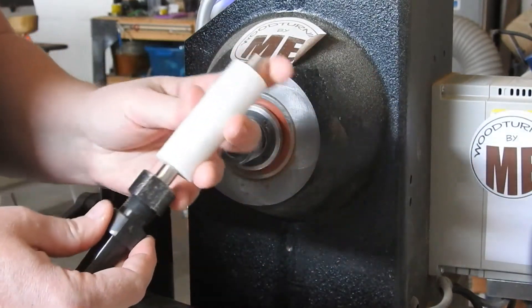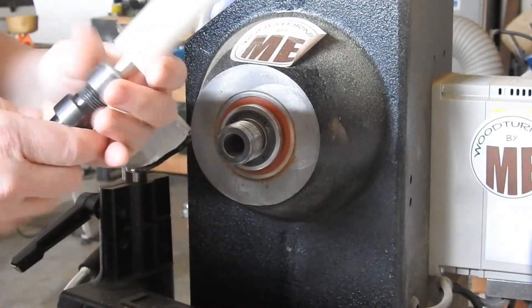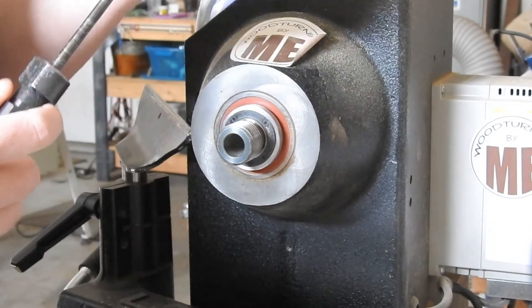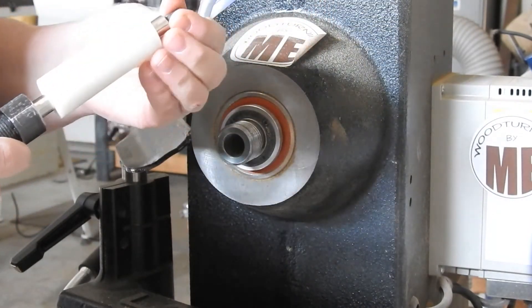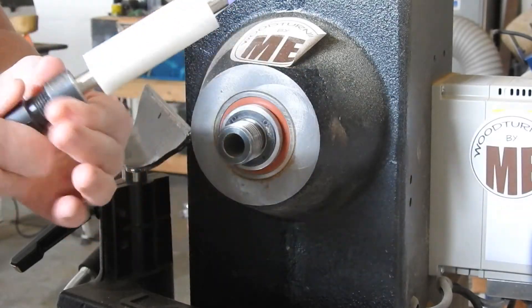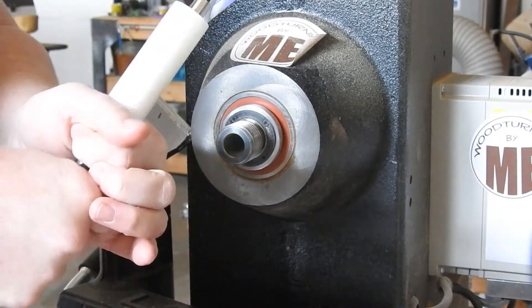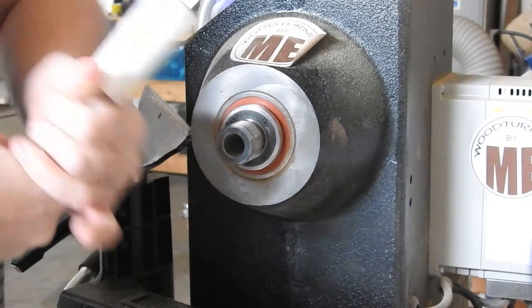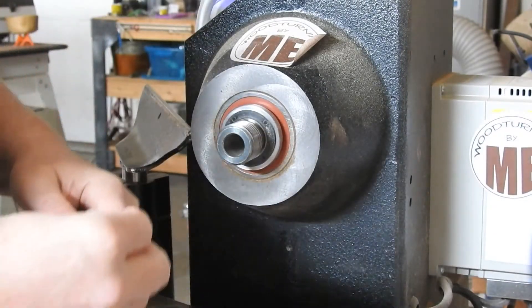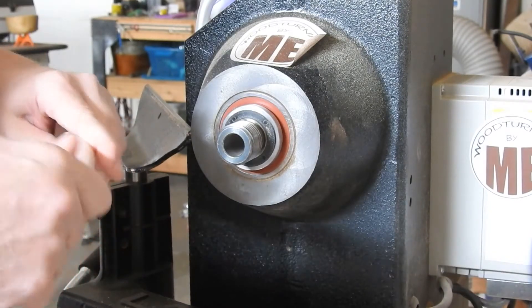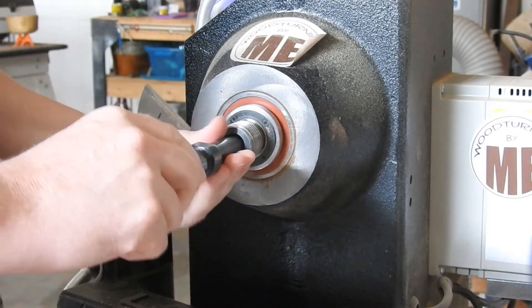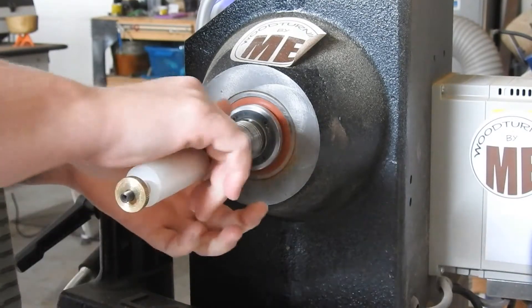Here I'm inserting the pen mandrel into the bushings. Just needed a bit more room there. There we go. And now I'm just securing the knurled nut to make sure that the blank is nice and tight on the mandrel.